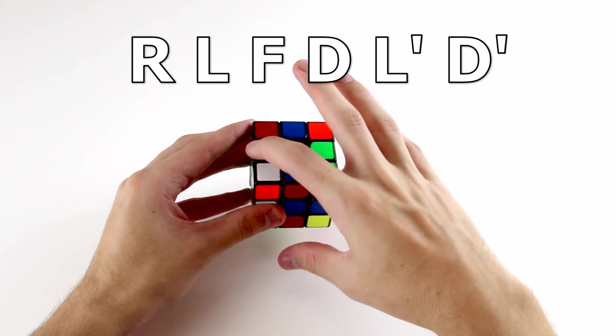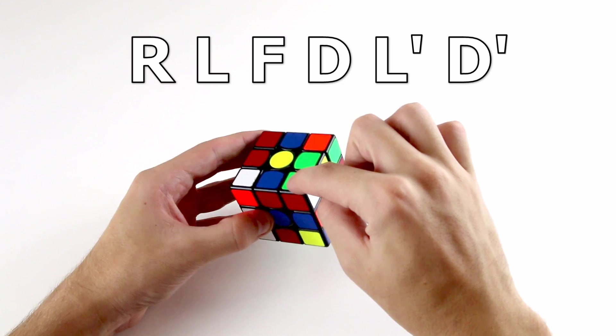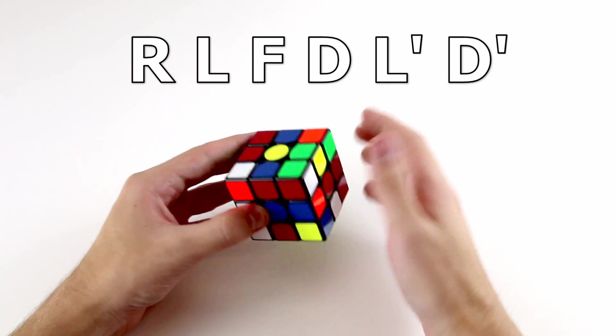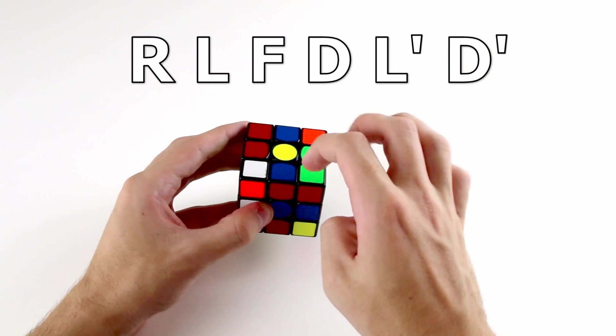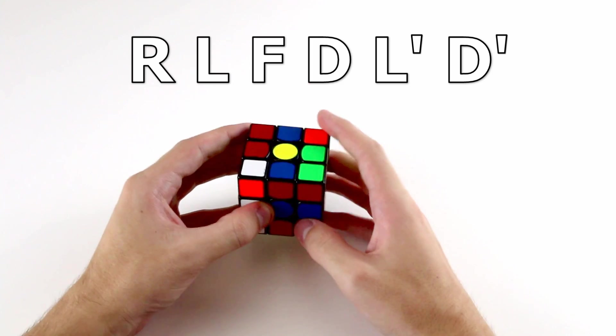So this edge will end up here and this corner will end up over here. So now that we know that, we can immediately go in and solve these two pieces after we solve the cross.